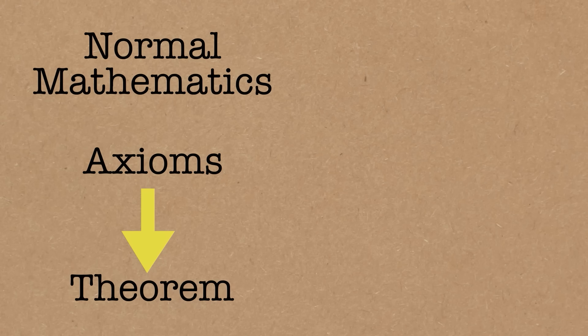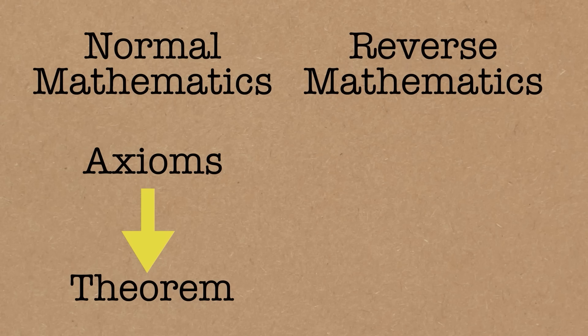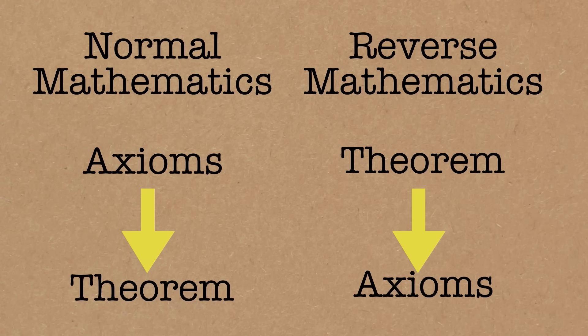What reverse maths does is this approach where we start with our theorem that we want to understand and then you ask the question, what axioms do we need to prove it? And by asking that question you get information about the logical content of the theorem.